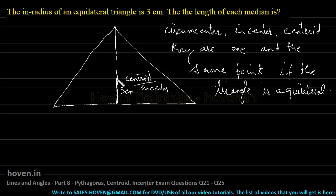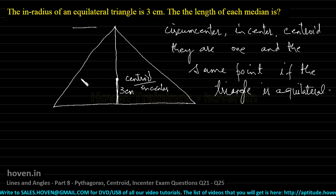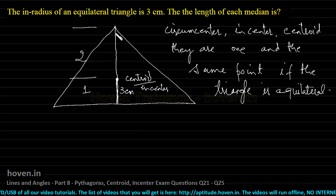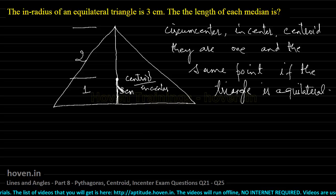Now, we know from a property of the centroid, that it divides the median in the ratio 2 is to 1. Two parts of the length of the median lie above the point and one part lies below the point.